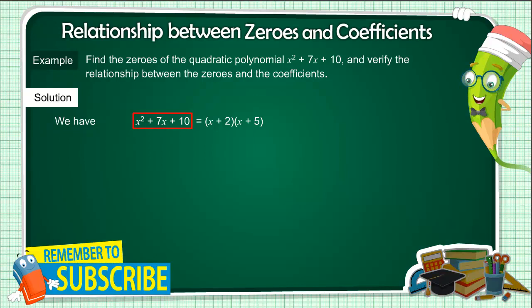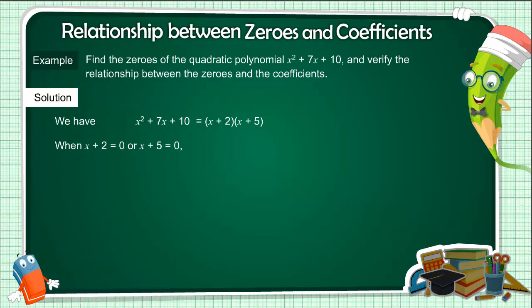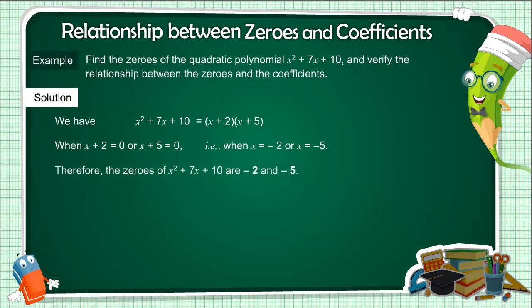The value of the polynomial is 0 when x plus 2 equals 0 or x plus 5 equals 0, that is when x equals minus 2 or x equals minus 5. Therefore, the zeros of the polynomial are minus 2 and minus 5.